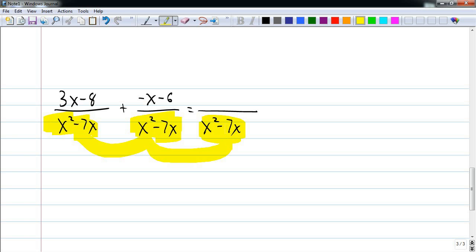Because these are the same, I can just copy these into the answer. In my numerator, I add or subtract whatever is in the numerator. So I would have 3x minus 8 plus negative x minus 6. I just add or subtract whatever is up here normally. Collecting like terms, I'm going to have 2x minus 14 over x squared minus 7x.